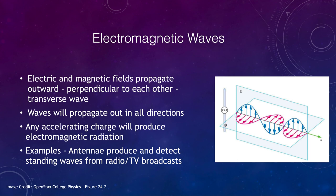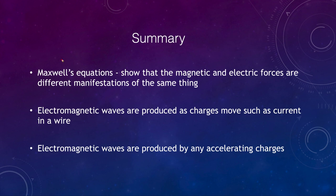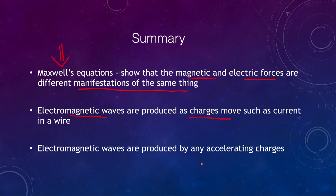To summarize our introduction to electromagnetic waves: Maxwell's equations showed that magnetic and electric forces are really different manifestations of the same thing, representing one of the origins of unified field theories. Electromagnetic waves are produced in a couple of different ways — as charges move, such as current in a wire, and also by accelerating charges through changing direction. The waves produced in a wire would most likely be very long-wavelength radio waves rather than visible light, as we'll discuss next time. That concludes this lecture on electromagnetic waves.